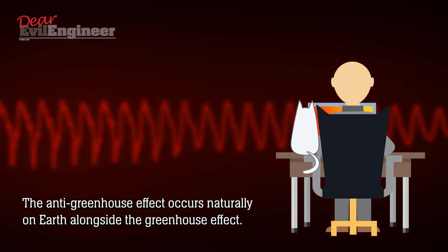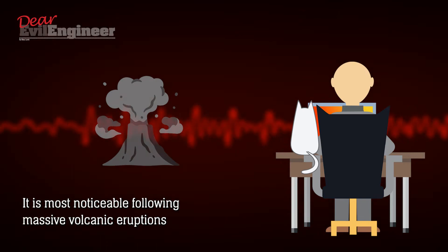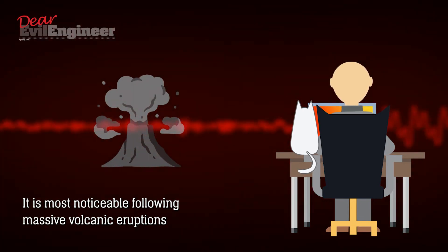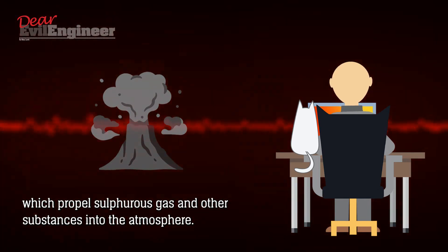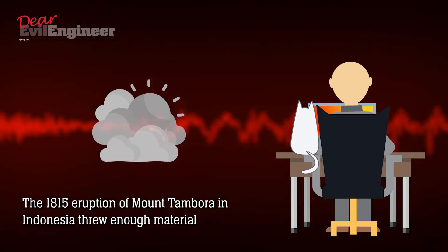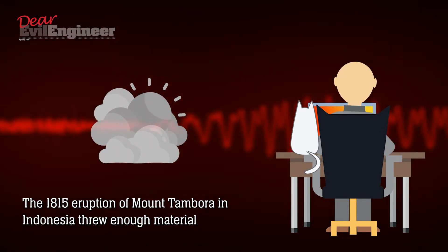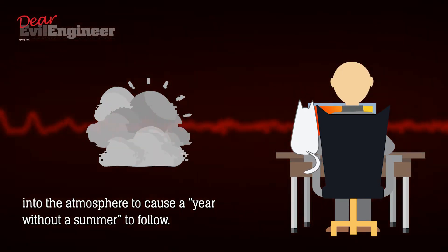The anti-greenhouse effect occurs naturally on Earth alongside the greenhouse effect. It is most noticeable following massive volcanic eruptions which propel sulfurous gas and other substances into the atmosphere. The 1815 eruption of Mount Tambora in Indonesia threw enough material into the atmosphere to cause a year without a summer to follow.